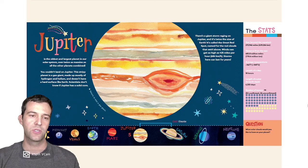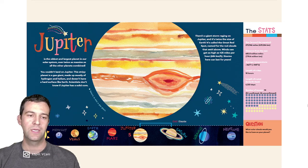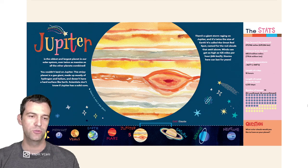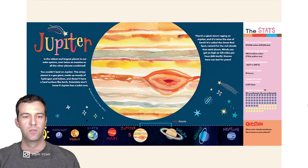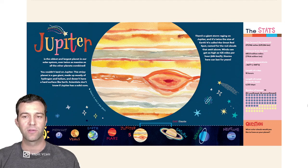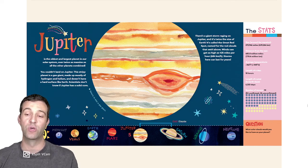Jupiter is the oldest and largest planet in our solar system, over twice as massive as all the other planets combined. You couldn't land on Jupiter. This stripy planet is a gas giant made up mostly of hydrogen and helium and doesn't have a hard surface like Earth. Scientists don't know if Jupiter has a solid core. There's a giant storm raging on Jupiter and it's twice the size of Earth. It's called the Great Red Spot, named for the red clouds that swirl above. Winds can get as high as 425 miles per hour. Storms here can last for years.